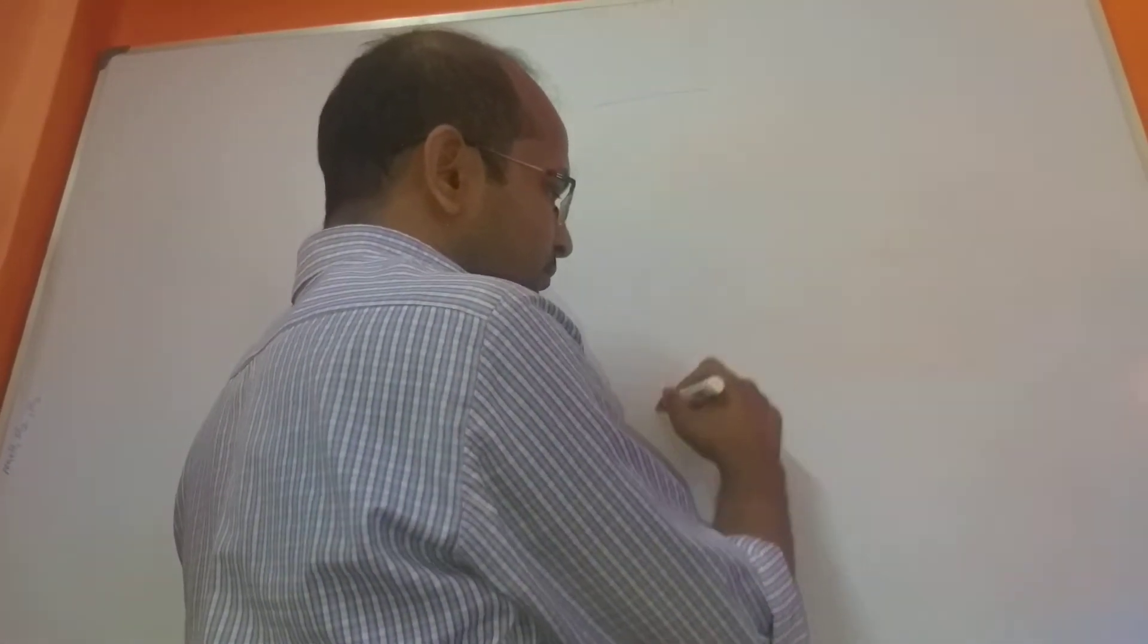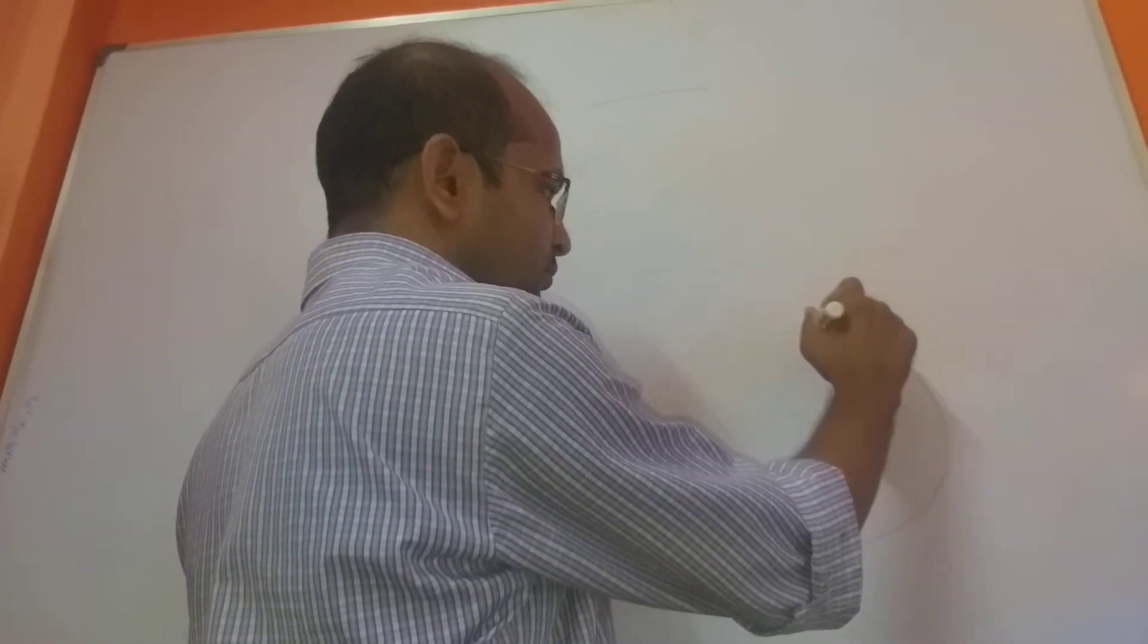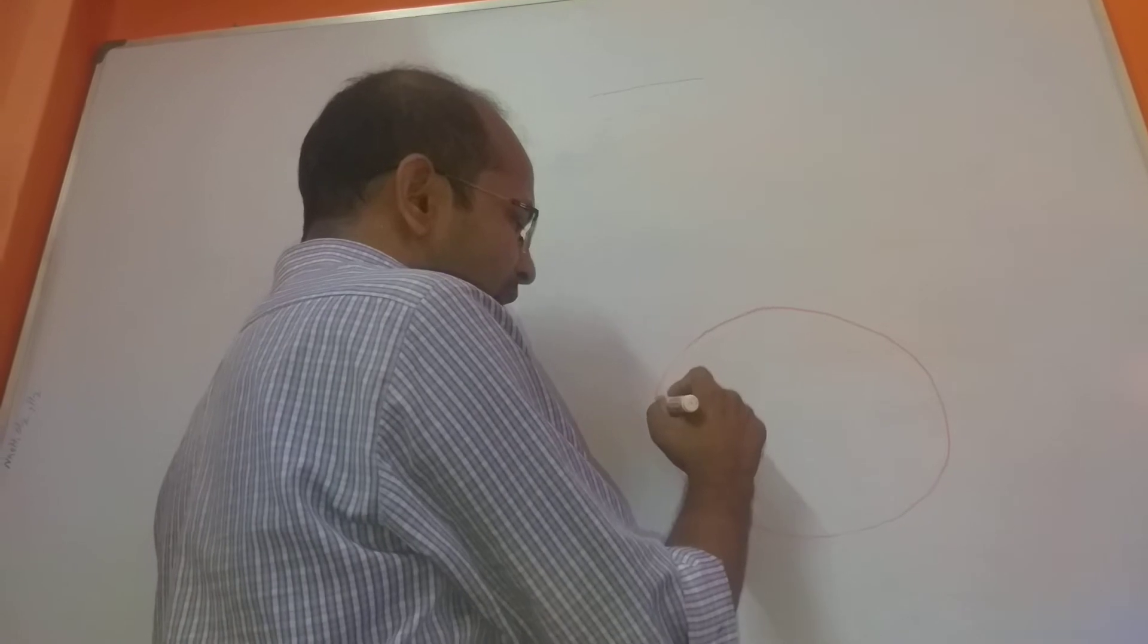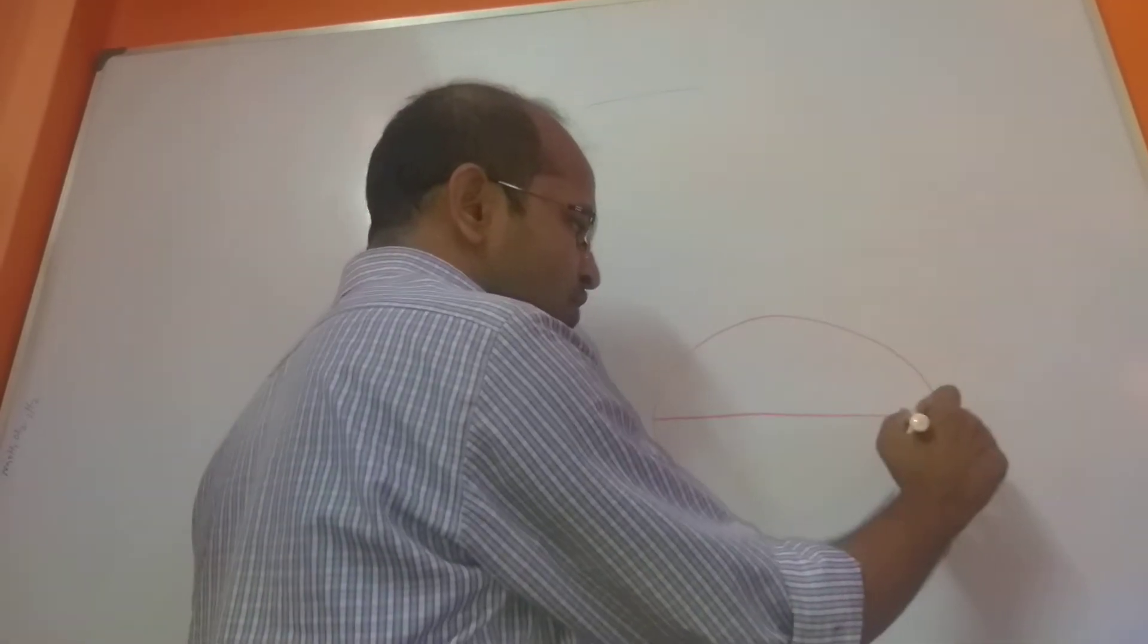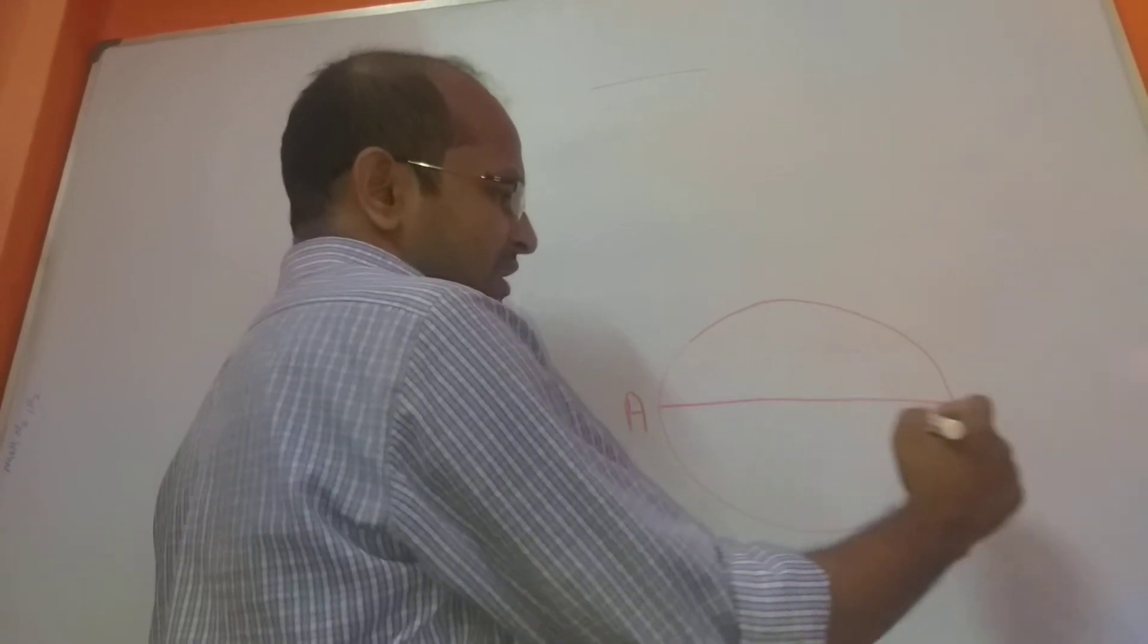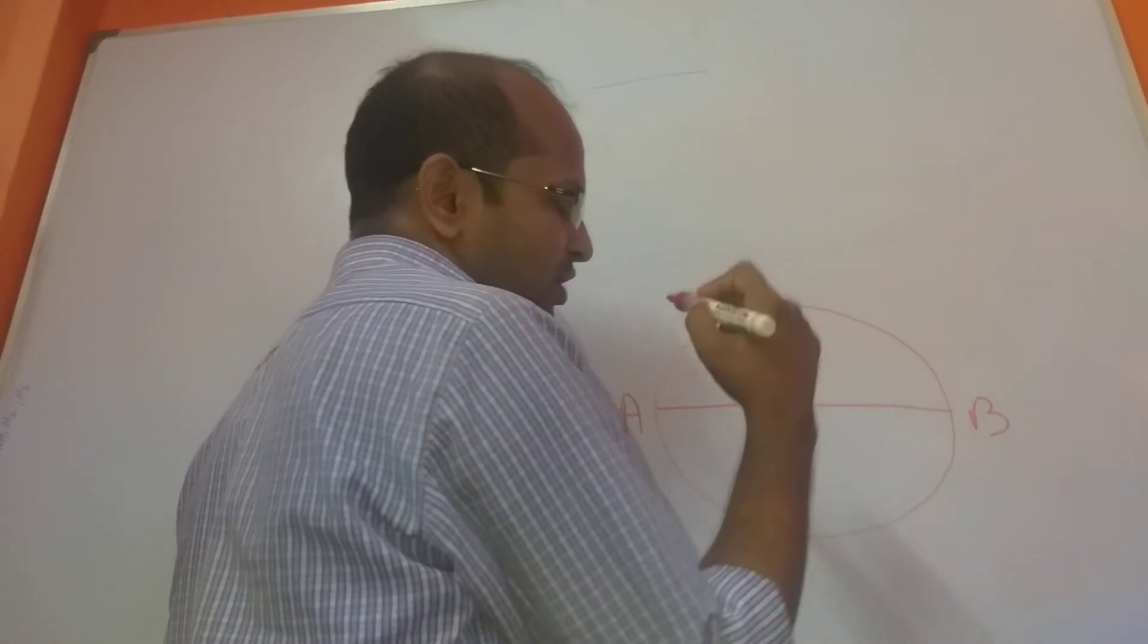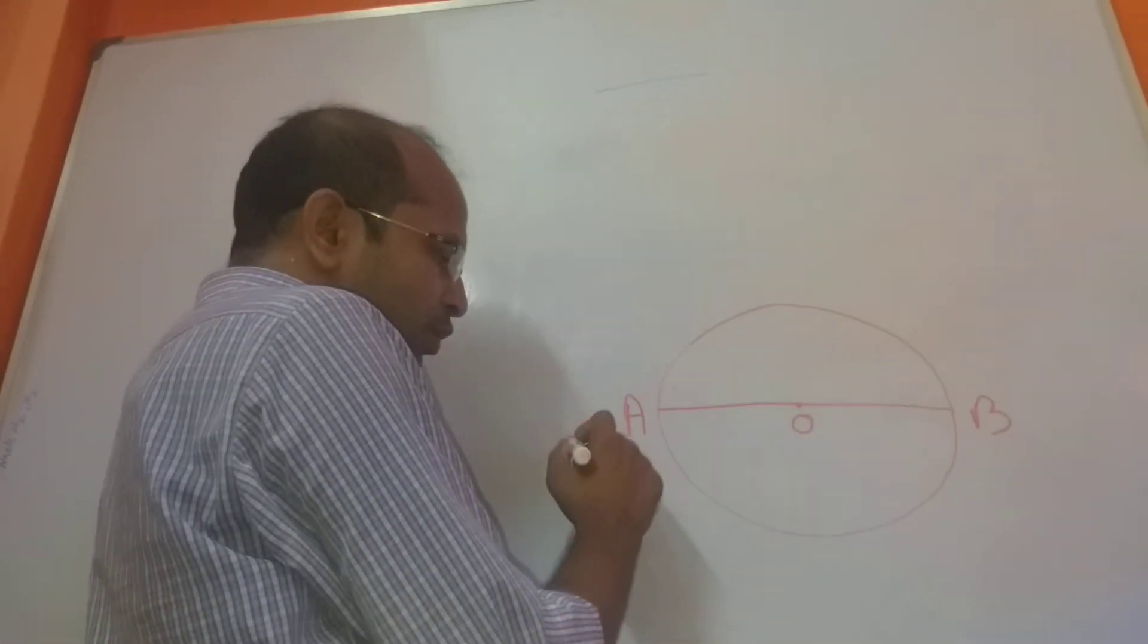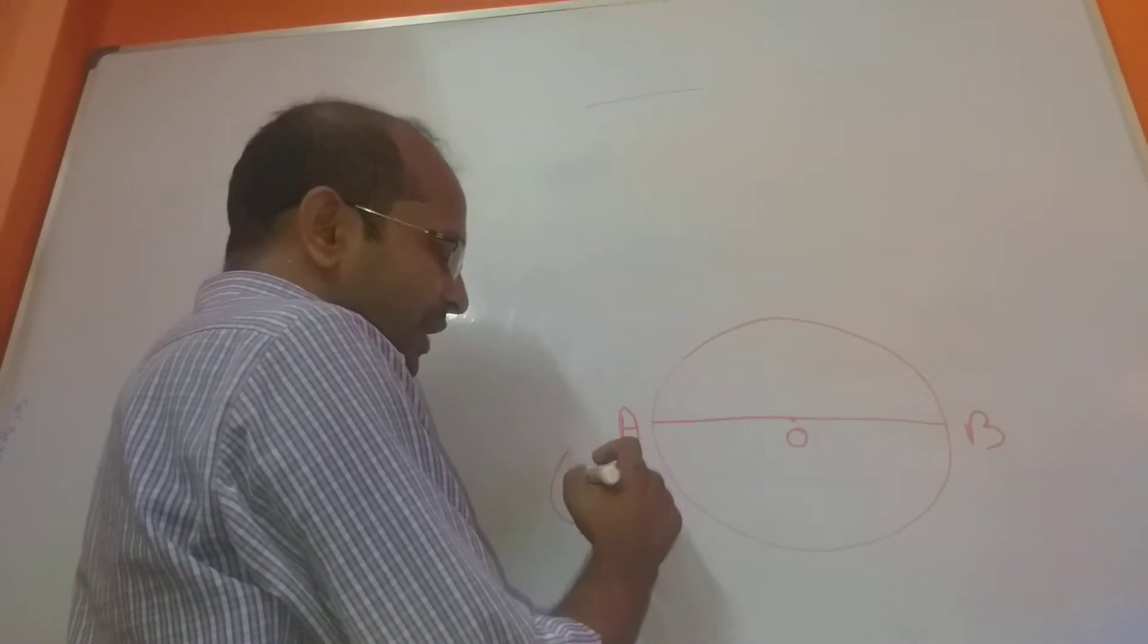Suppose there is a circle. In the question, the diameter is given. This is the center of the circle. They will give you the coordinates of the ends of the diameter.